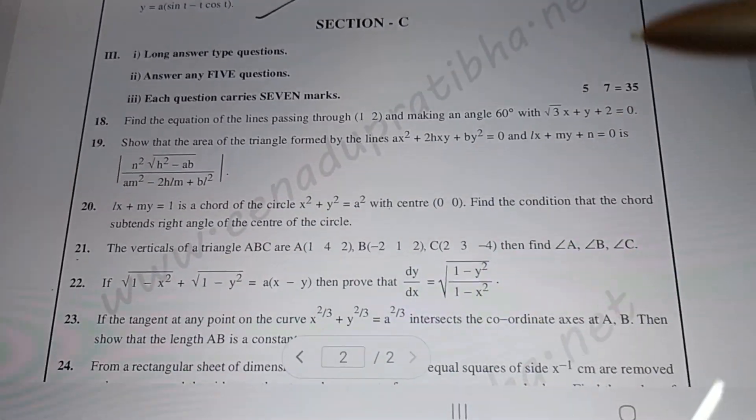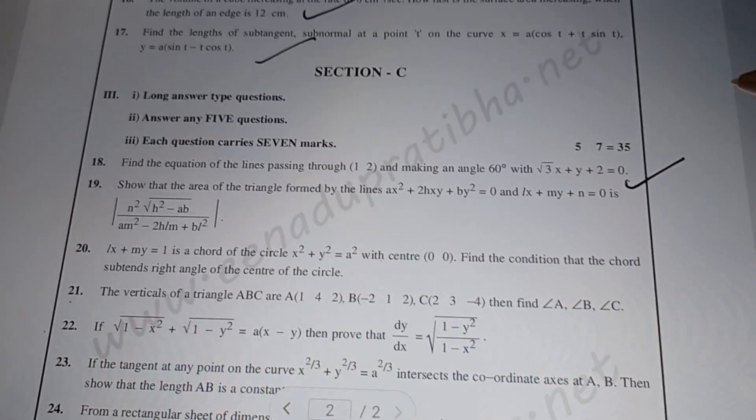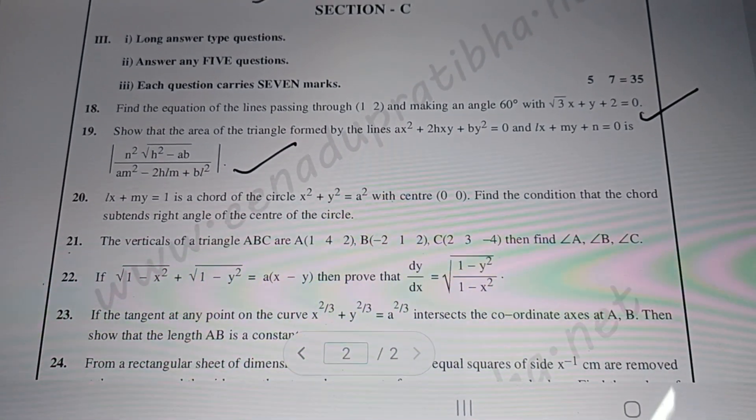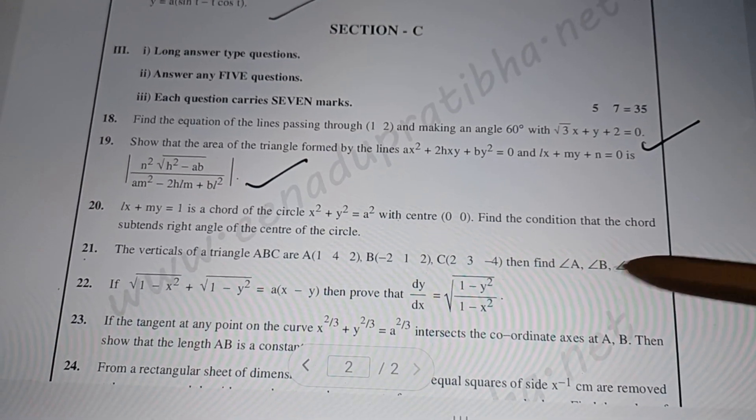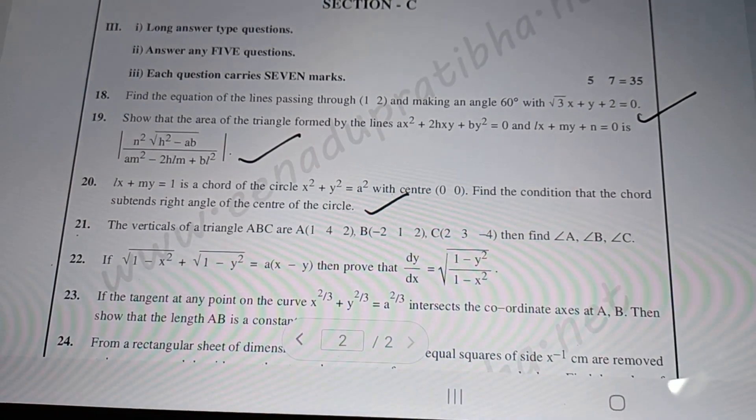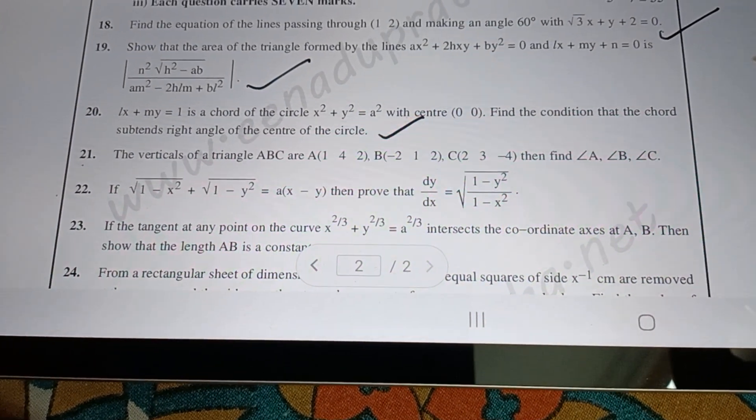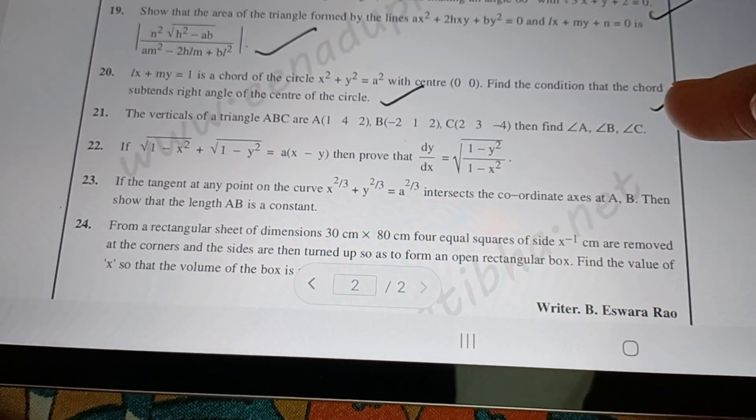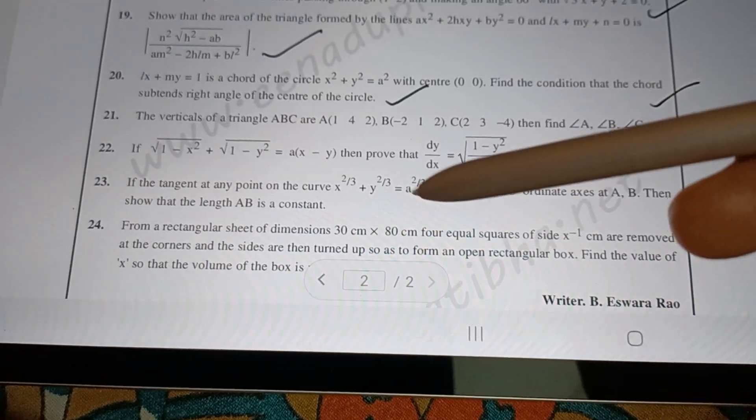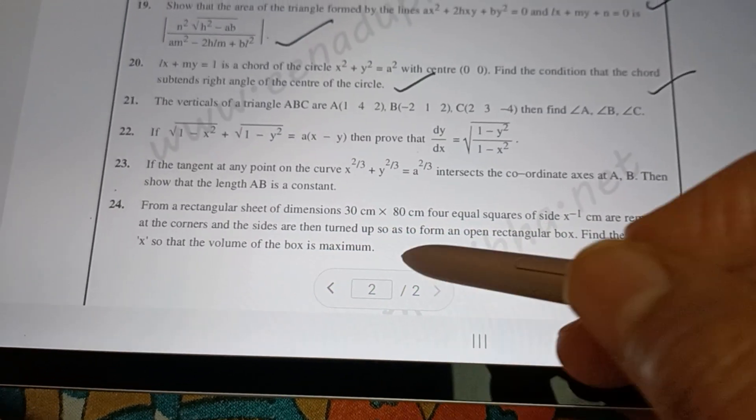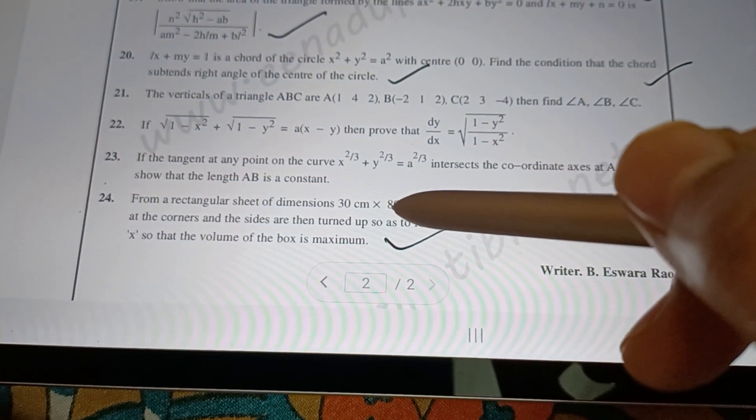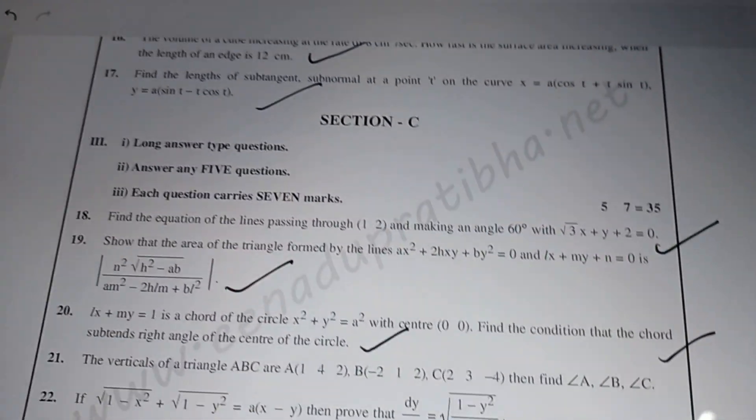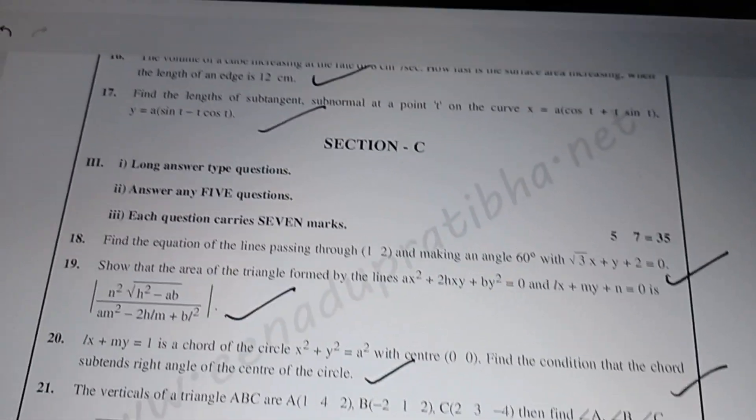In Section C, we have DC and DRs with one 7-mark question. Question 21 covers 3D with one 7-mark question. Question 22 has one question. If there are 5 questions, compulsory marks are 7. This is the 1B model. Please practice and share. Thank you, all the best.